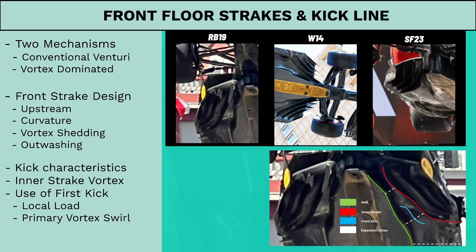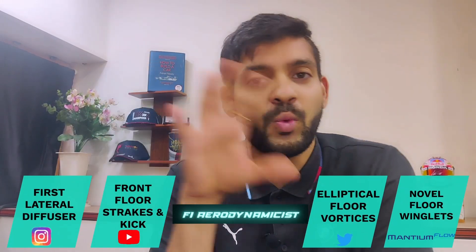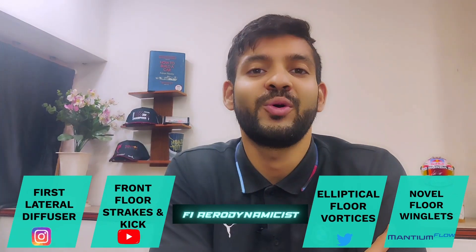What unique benefits would the front floor kick provide? This design could be useful for two main reasons: first, to generate local front downforce by using the volume expansion between the strakes and the keel; and second, to manage your primary vortex strength and swirl — which is the ratio of tangential velocity to axial velocity and determines vortex stability as it travels downstream. You need tools to control the health and swirl of your vortex system so that you can make them perform across a large range of ride height conditions while still pushing them as hard as possible.